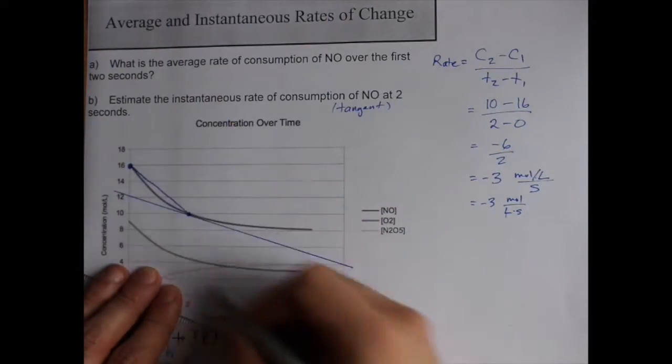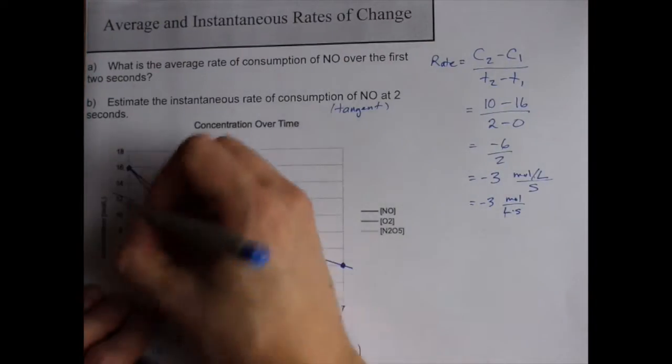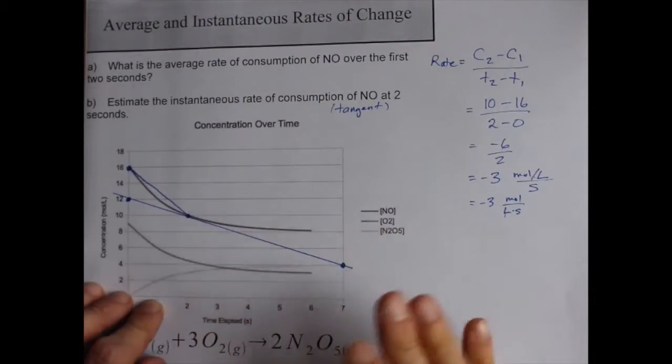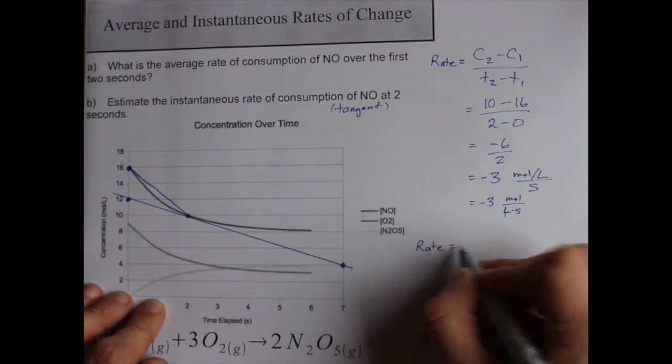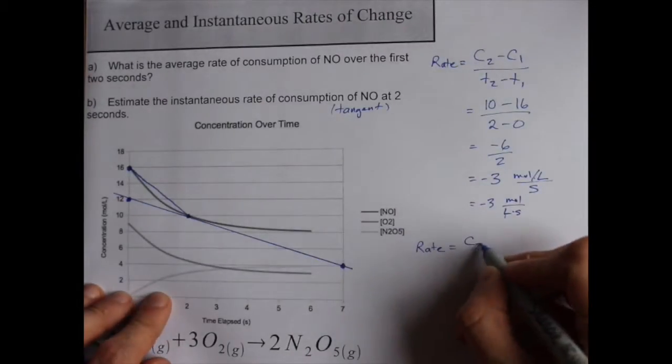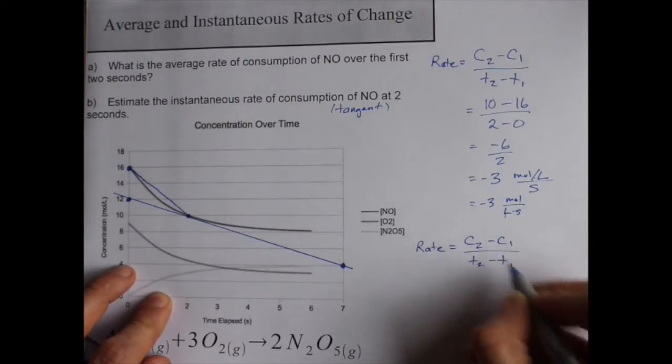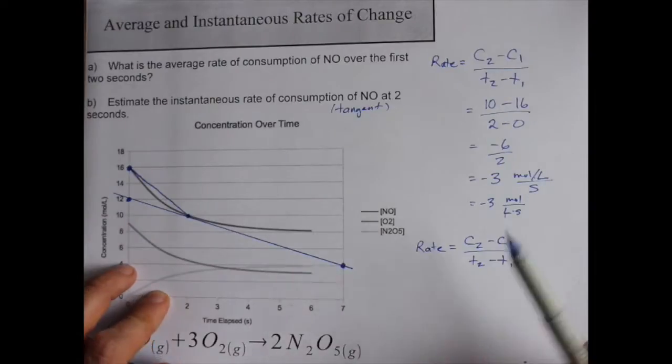Now we just need the slope of that line. I notice there's a point, a nice point there, and there's a nice point here. That was a major coincidence, but you just have to find two points that are on the line and do the rate C2 minus C1 over T2 minus T1 again. Even though the points you're using are not on the curve, they're on the tangent line. Again, that's what makes it an instantaneous rate of consumption.